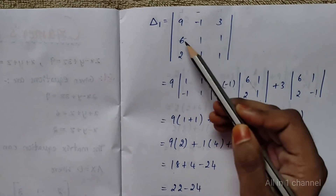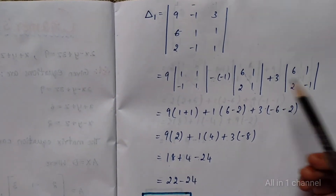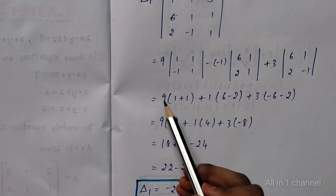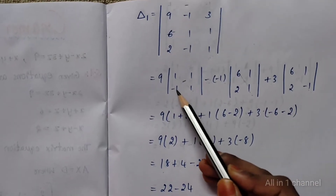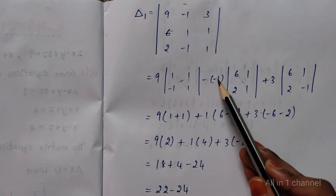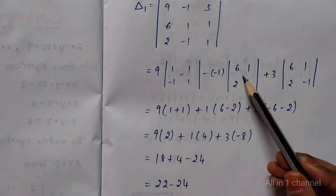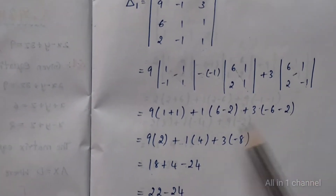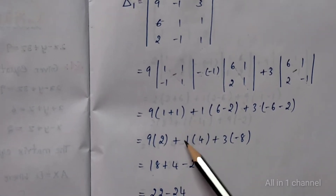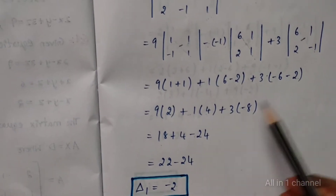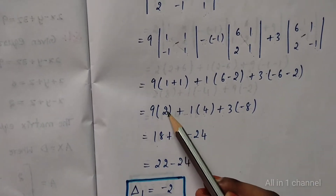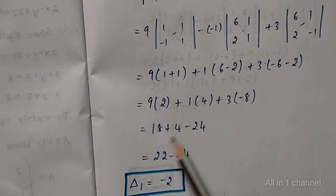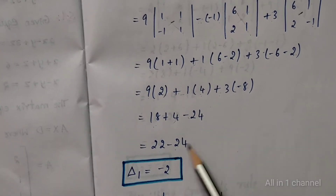Minus 1: delete first row and second column to get 6, 1, 2, 1. Plus 3: delete first row and third column to get 6, 1, 2, minus 1. Computing: 9 into 1 equals 1, here will be minus, so minus 1 into minus 1 plus 1 equals plus 1. 6 into 1 equals 6; 2 into minus 1 equals minus 2. Plus 3: 6 into minus 1 equals minus 6; 2 into minus 1 equals minus 2. 9 into minus 2 equals minus 8. 9 into 2 equals 18. Plus 1 into 4 equals 4. 3 into minus 8 equals minus 24. 18 plus 4 equals 22. Minus 24. 22 minus 24 equals minus 2.